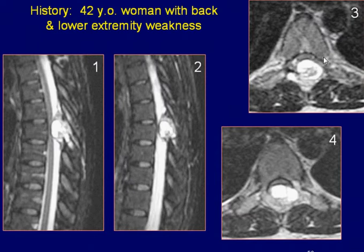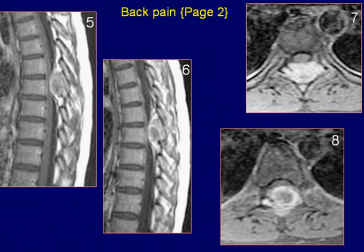Axial T2-weighted images show involvement of the posterior elements of the dorsal vertebra by the hypointense lesion. The spinal cord is markedly compressed by the lesion.